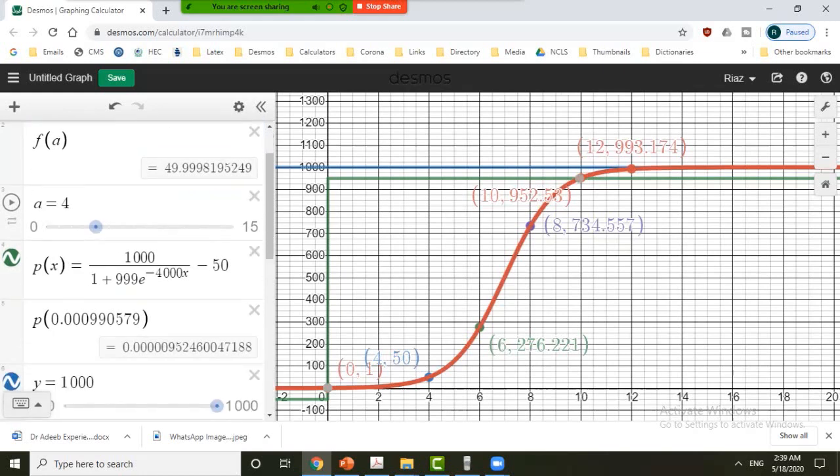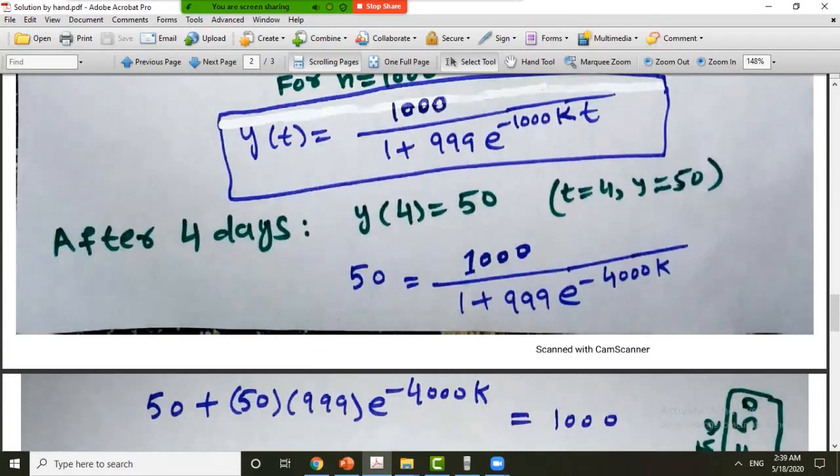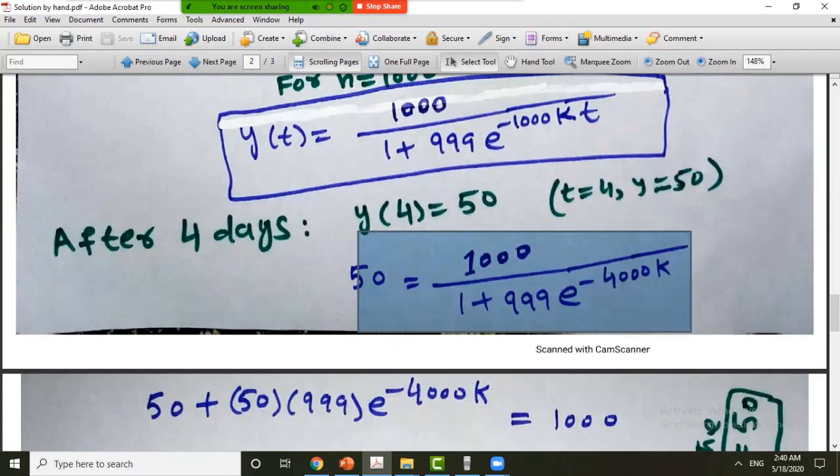So if you want to see the geometrical meaning of the extra condition, which was y at 4 is equal to 50, it was here. And this was the equation. So if you want to know what is the geometrical meaning of the solution k or the root, the root means the graph of the equation passes through the x-axis.